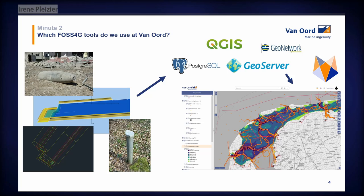We get data from all kinds of sources — some from the survey department identifying dangerous objects, some from the design department engineering, and also sensors from the field for projects. We usually have to transform and process the data, put it in PostGIS, and use GeoServer and QGIS for making it accessible. We also have a solution from Terrestris, which you see a screenshot of, where we visualize data and make it accessible.